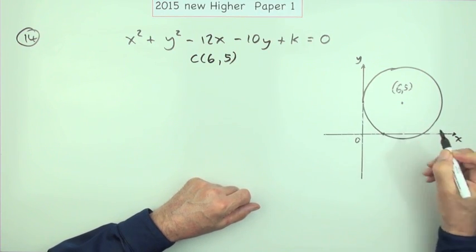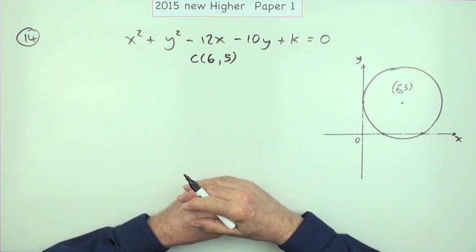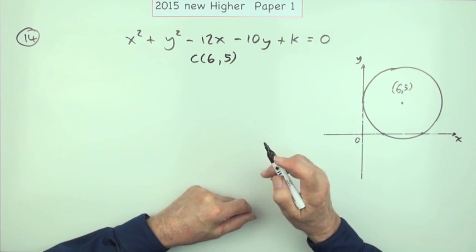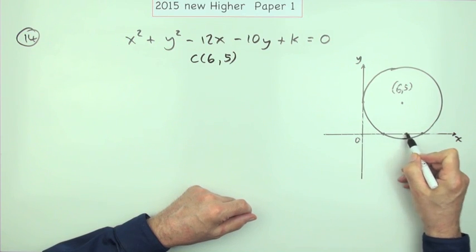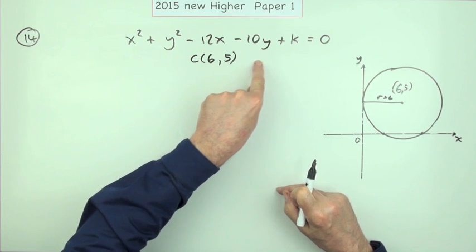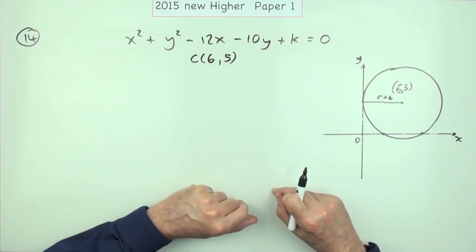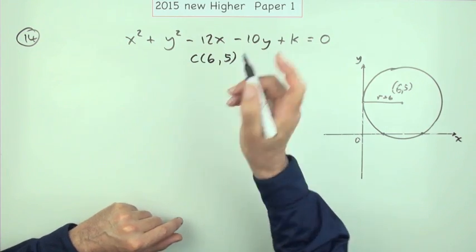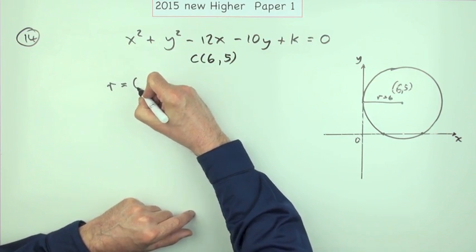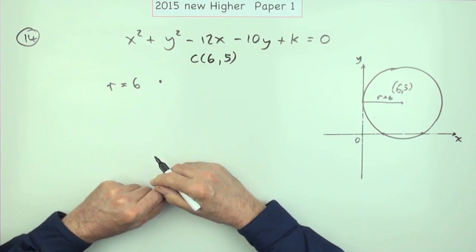That looks like the situation where you've got three points — two points on the x-axis and one point on the y-axis — which is what 'cuts the axes at exactly three points' means. There are actually two ways you could do this. Obviously, if it's six along and five up, then the radius is six when it just touches the y-axis. That would be the first mark.